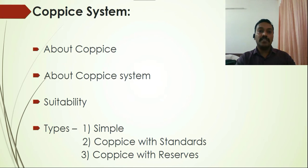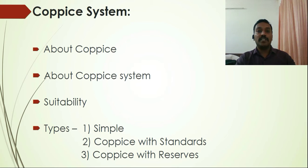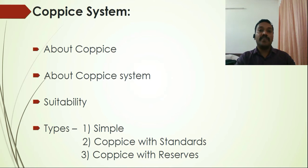The second type is the coppice with standards system. Here two types of trees grow in the given area: overwood (standards) and coppice trees. The standards are sourced from seeds. Two rotation systems are followed — one for standards and one for coppice shoots. The age of standards will be a multiple rotation of the coppice trees.